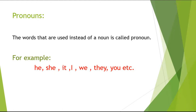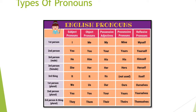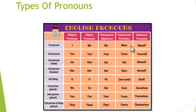What are the types of pronouns? The types of pronouns are: subjective pronouns, objective pronouns, possessive pronouns, and reflexive pronouns. Here you can see the first person, second person, and third person. When we add 'self' to the pronouns, we call them reflexive pronouns — myself, yourself, himself, herself. These are really important, so you must remember this.